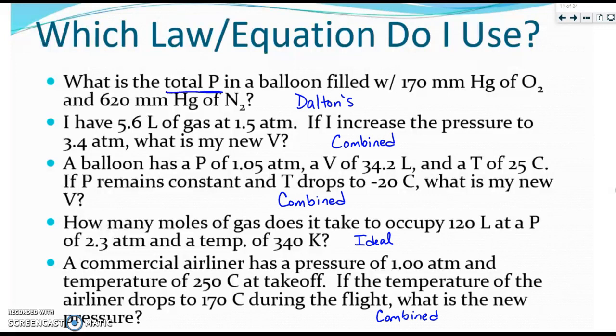Please check your answers. The first one has the words total pressure in it. So you should have said Dalton's. The second one provides you with two pressures. So it's combined. The third one provides you with multiple temperatures. So it's combined. The fourth one has one of everything. So it's ideal. And the last one again gives you two temperatures. So it would be combined.